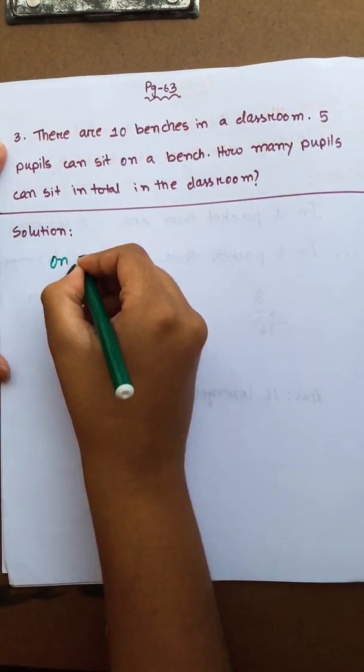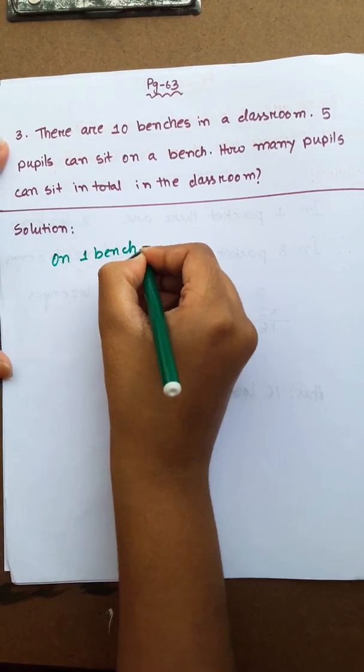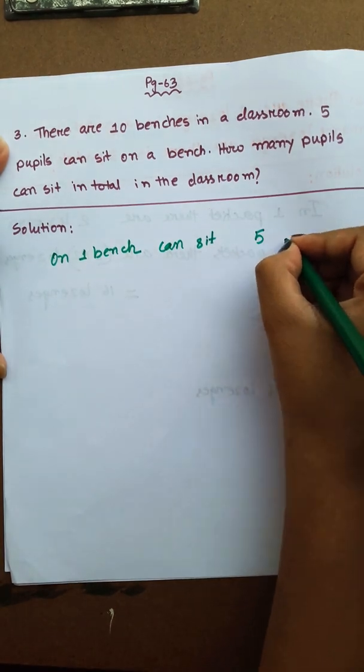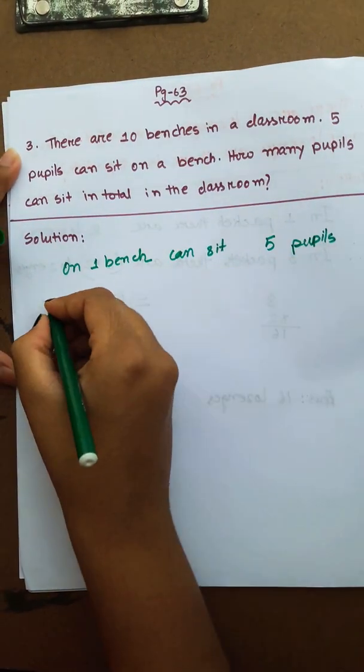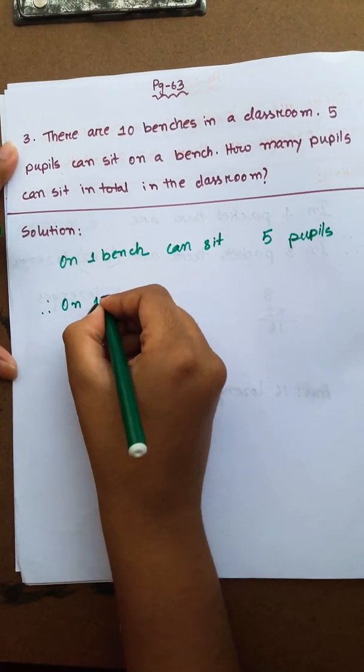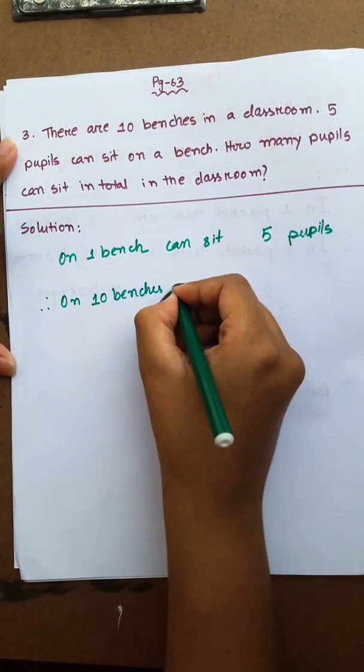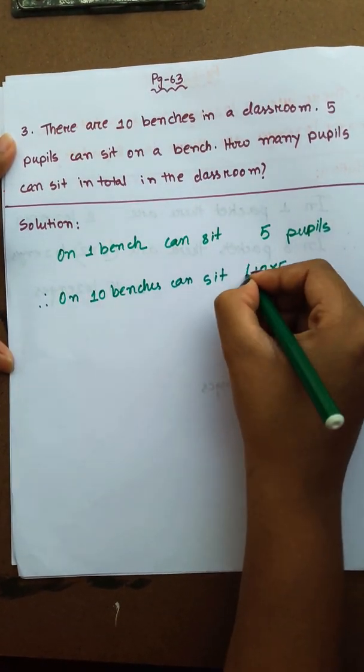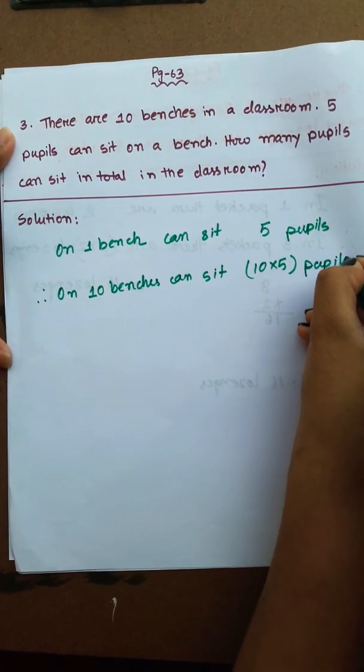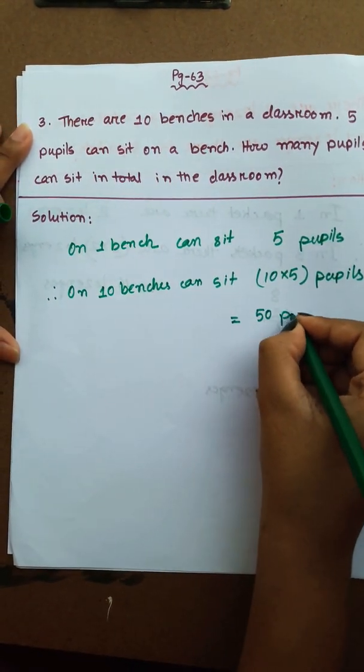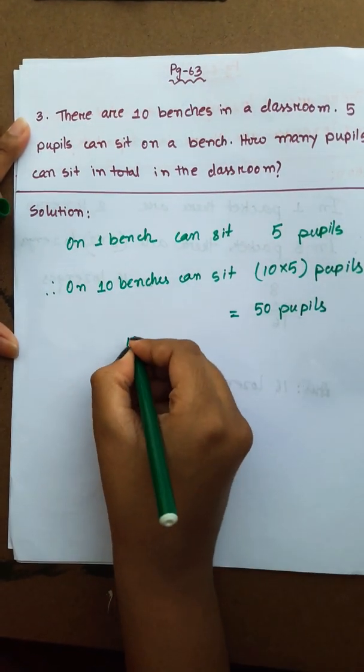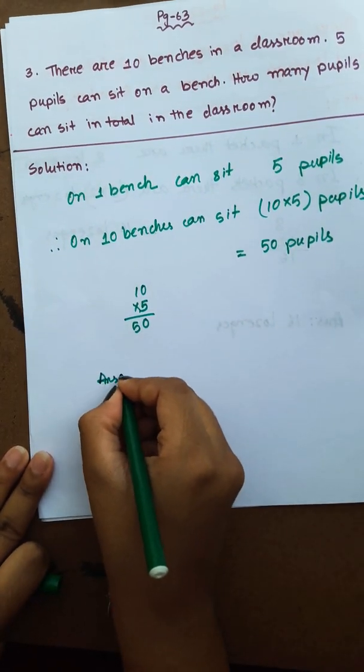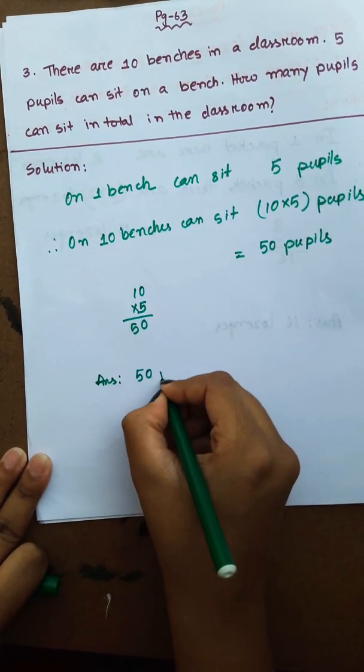So you should write: On 1 bench can sit 5 pupils. Therefore, on 10 benches can sit 10 into 5 pupils. 10 into 5 is 50. 50 pupils. Therefore, answer is 50 pupils.